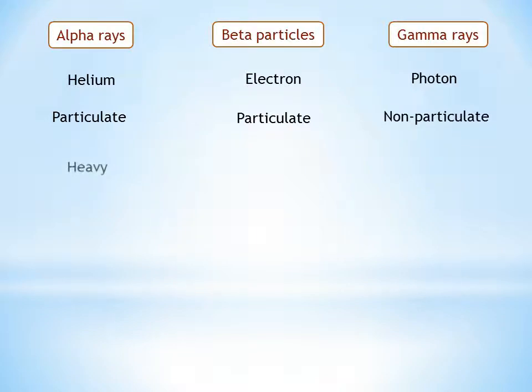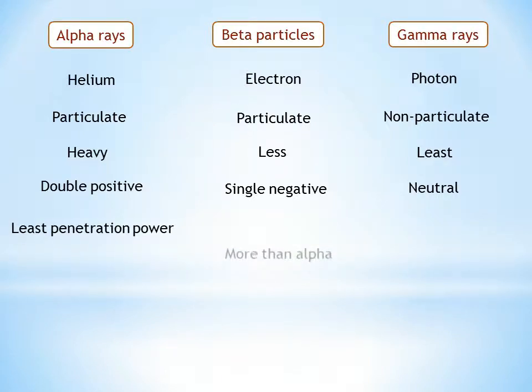Alpha particles are double positive charged, hence they have a heavy mass. Whereas beta particles are smaller, they are lighter and they carry a single negative charge. Gamma rays are the least heavy among all these three or they are neutral.